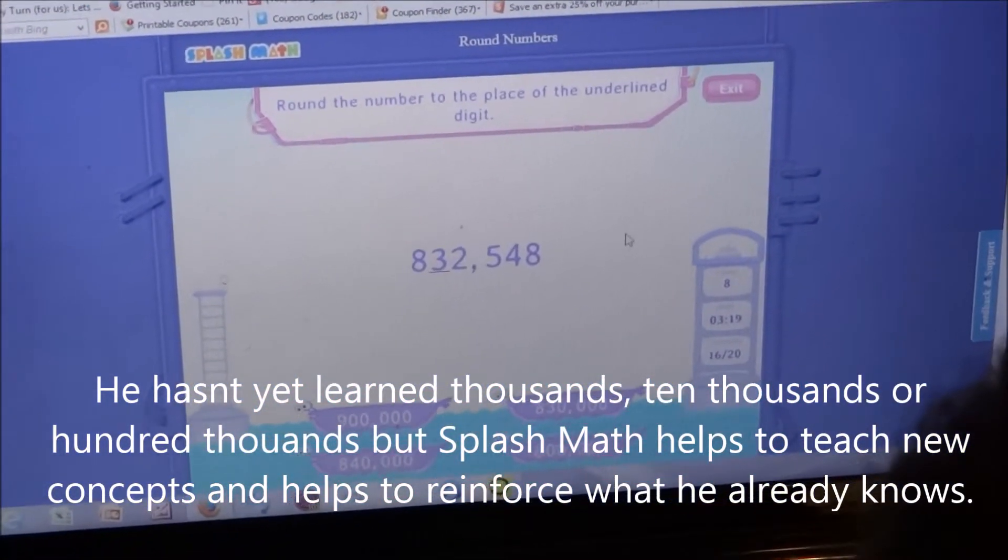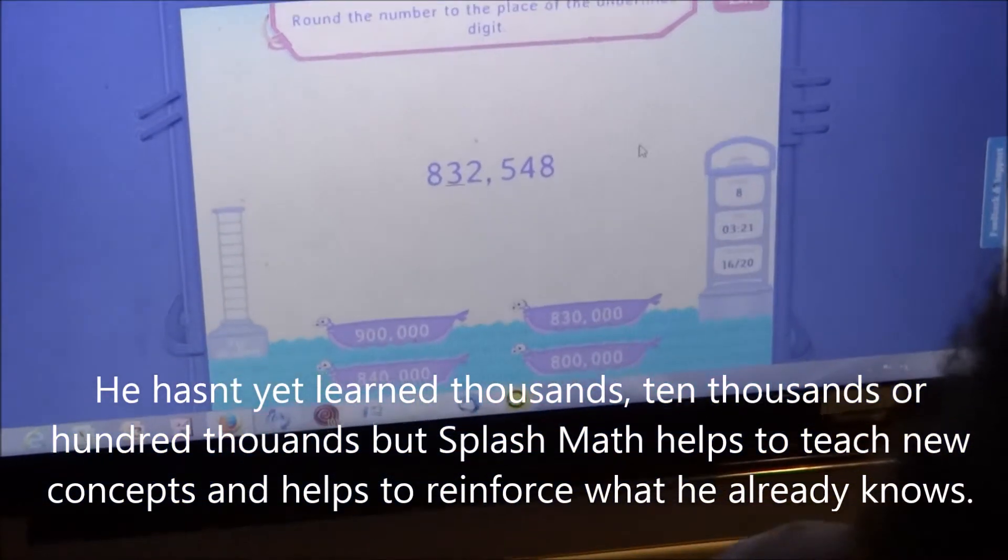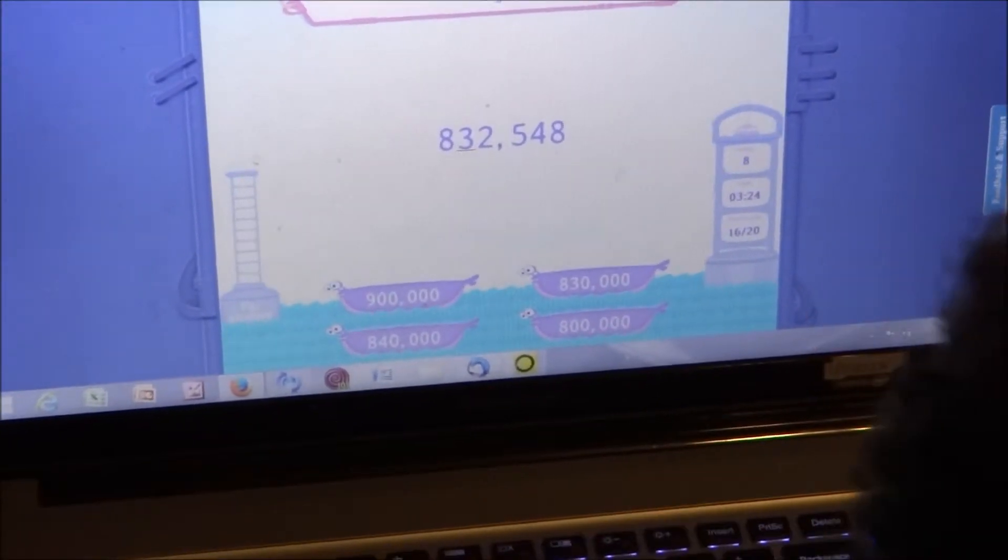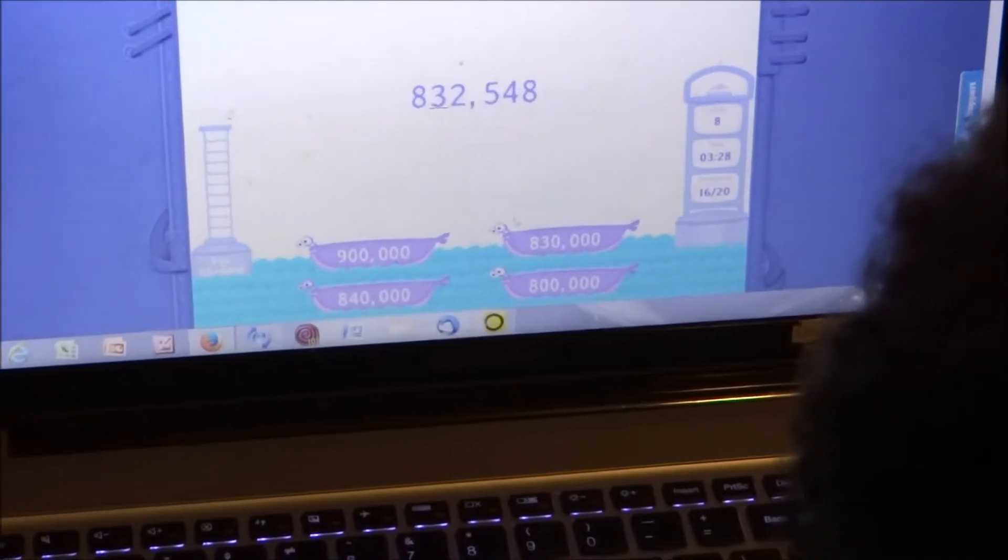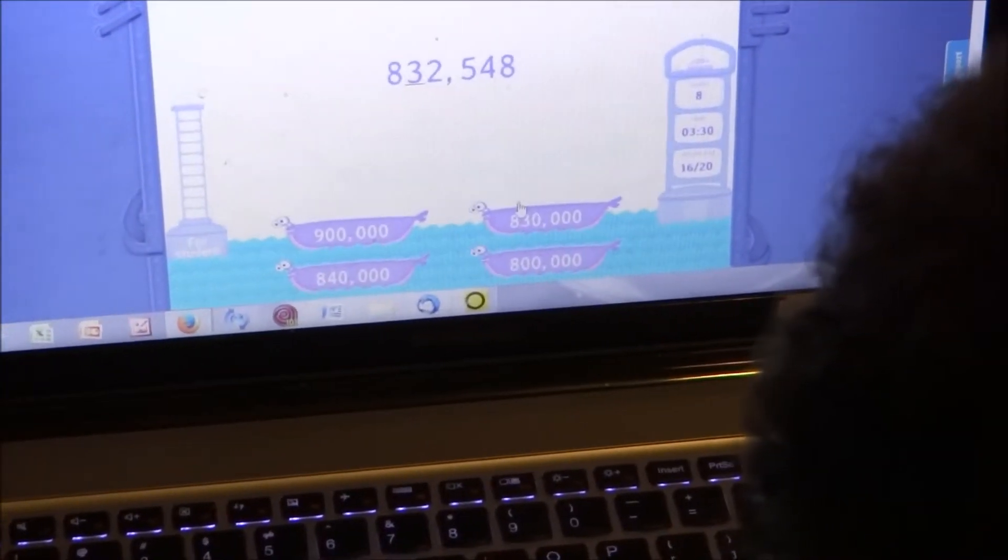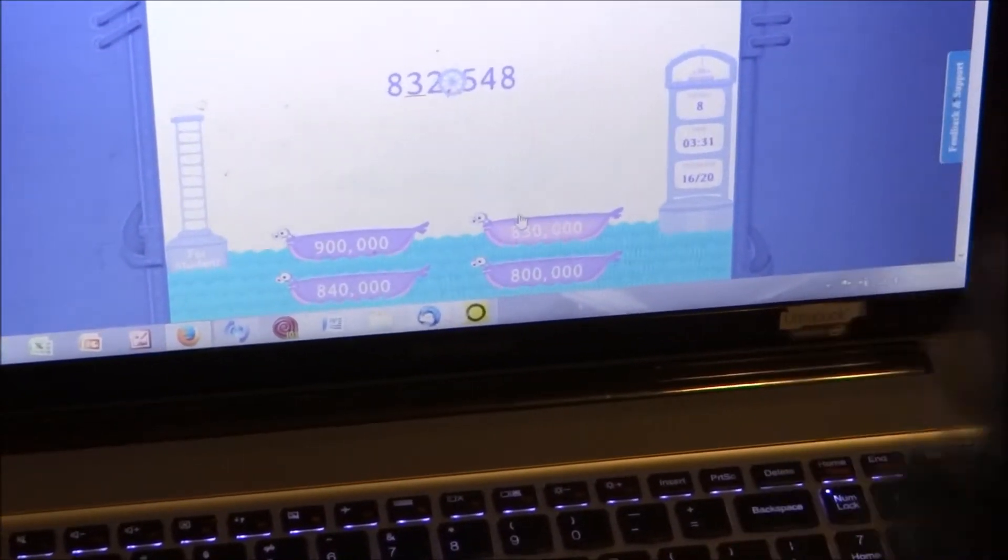Round the number to the place of the underlying digit. What's underlined? 32,000. So 32,548. So is that closer to 30,000? Yes.